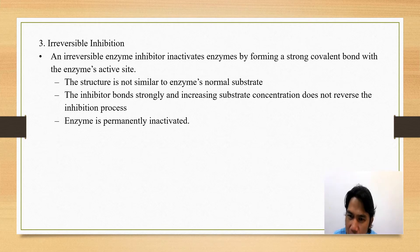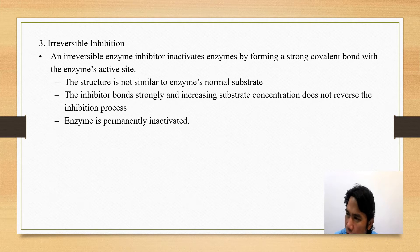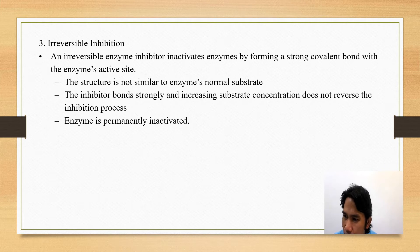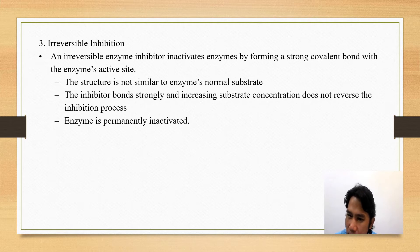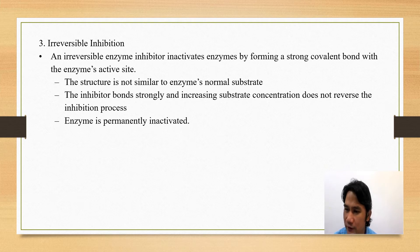The third type of inhibition is irreversible inhibition. The enzyme is inactivated because the inhibitor forms a strong covalent bond with the enzyme active site. The structure is not similar to the enzyme's normal substrate, but the inhibitor bonds strongly to the enzyme. Increasing substrate concentration does not reverse the inhibition process — the enzyme is permanently inactivated.